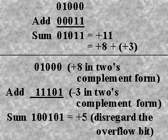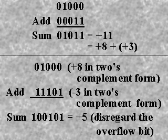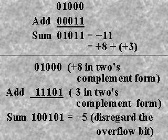Using A as plus 8 and B as plus 3 again, we will subtract a smaller number from a larger number. To solve for A minus B, we express plus 8 and minus 3 in the 2's complement and add. Plus 8 in 2's complement form is 0, 1, 0, 0, 0, and minus 3 in 2's complement form is 1, 1, 1, 0, 1. The process of subtraction of these two numbers appears as shown in the illustration.